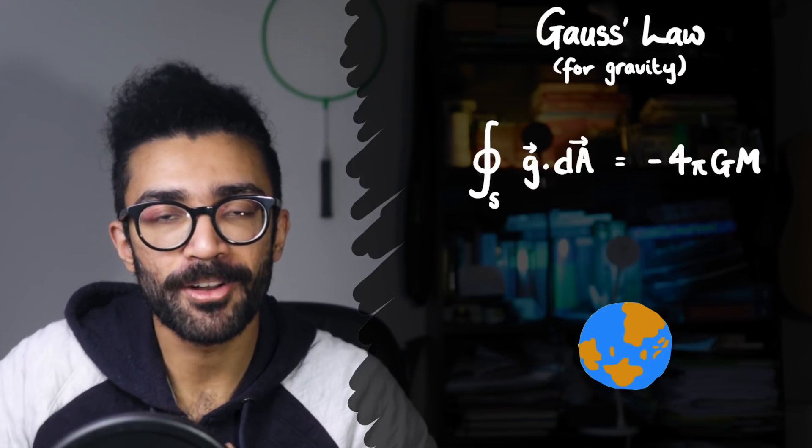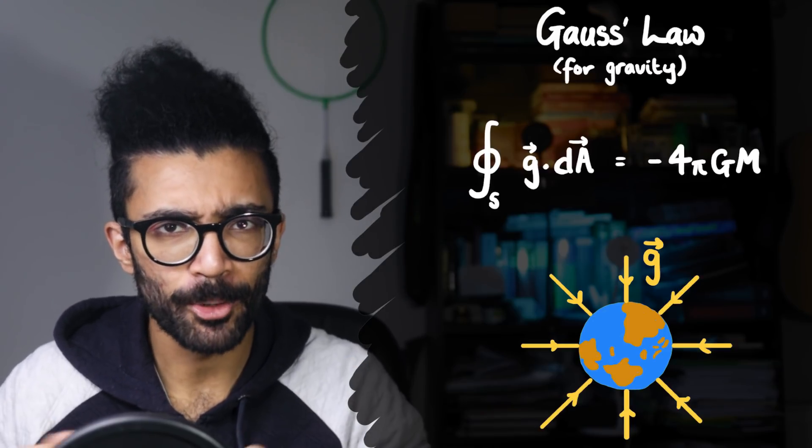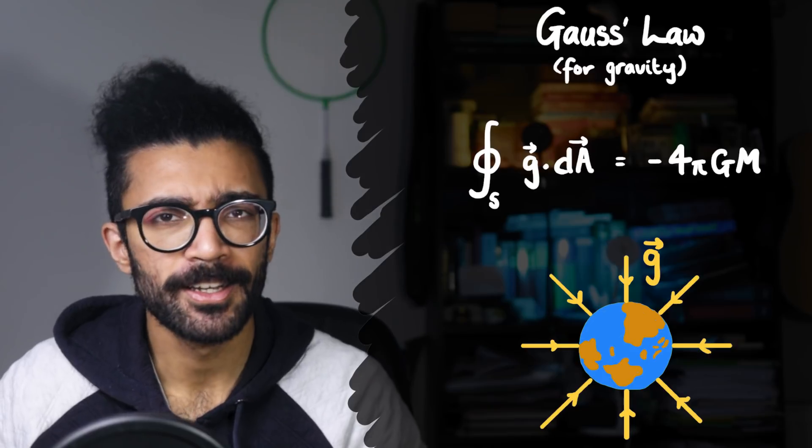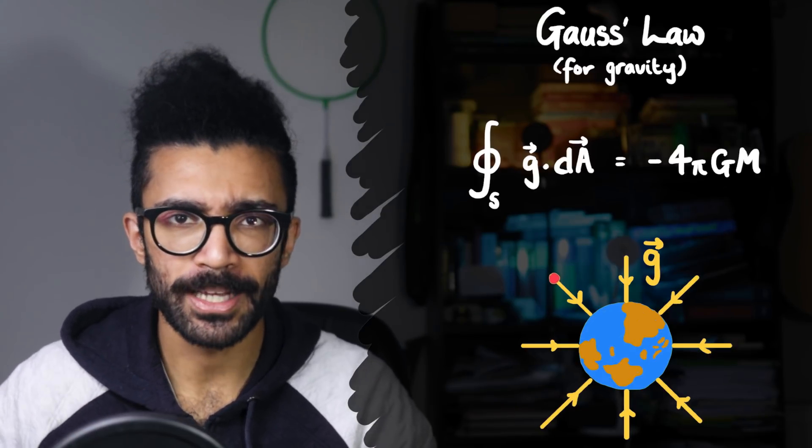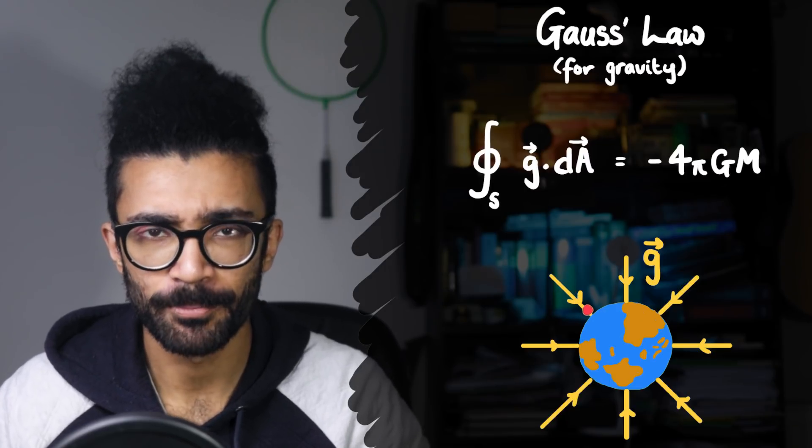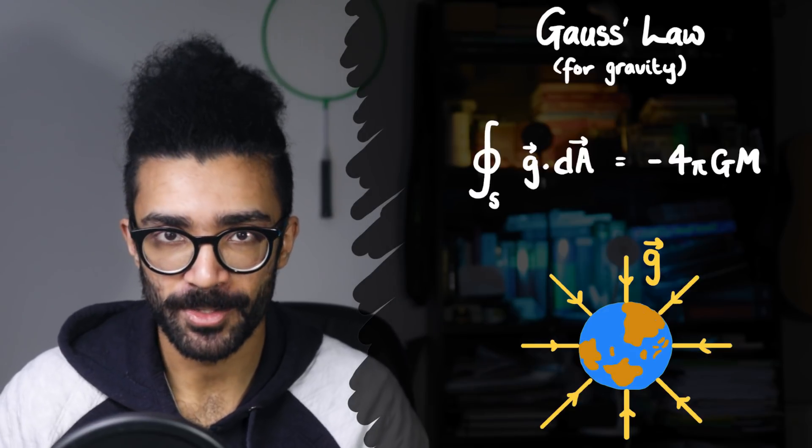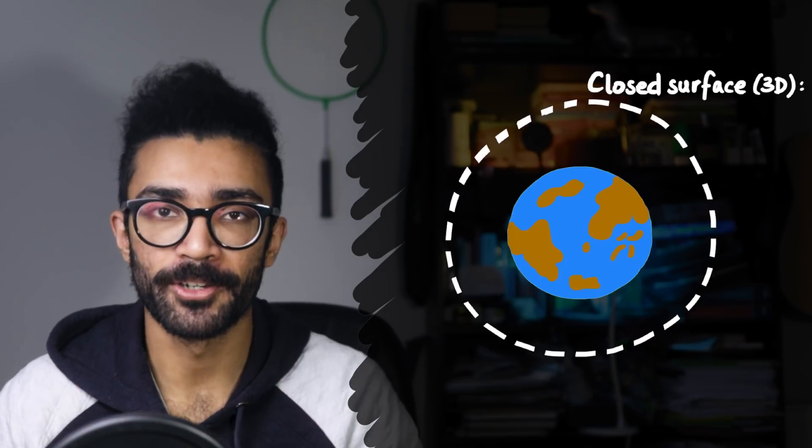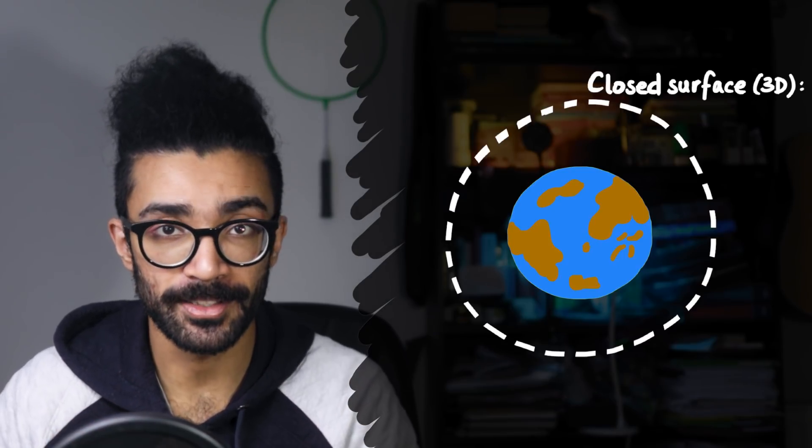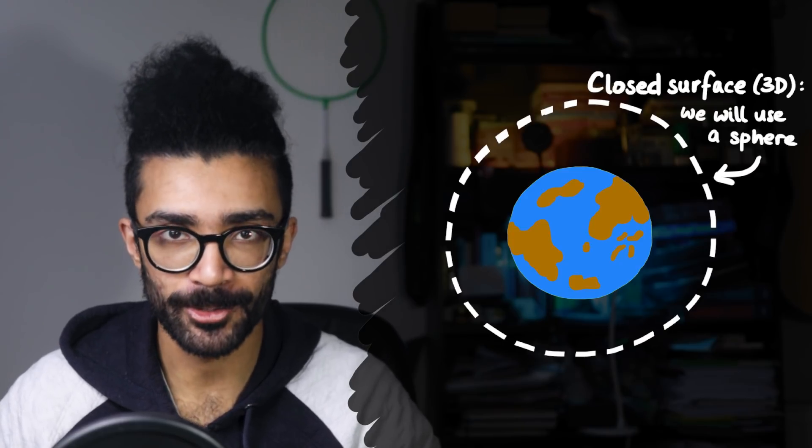We may know already that Earth's gravitational field is meant to look like this, radially inward-pointing gravitational field lines, meaning that any little mass placed at any one of these points will accelerate towards the center of the Earth. But how do we know that Earth's gravitational field looks like this? Well, this is where Gauss's law comes in. We begin by considering a random surface, a closed surface, that entirely encapsulates the Earth. For simplicity's sake, we will consider this spherical closed surface.